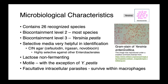Next we're going to talk about Yersinia. This genus contains 26 recognized species, most of which are biocontainment level 2. Yersinia pestis is biocontainment level 3 and is the etiology responsible for plague — the historical Black Death. We can grow Yersinia on selective media, which can be very helpful in identification. These organisms are lactose non-fermenting, and with the exception of Yersinia pestis, they are motile. Yersinia are also facultative intracellular parasites, allowing them to hide from the immune system and survive within macrophages.